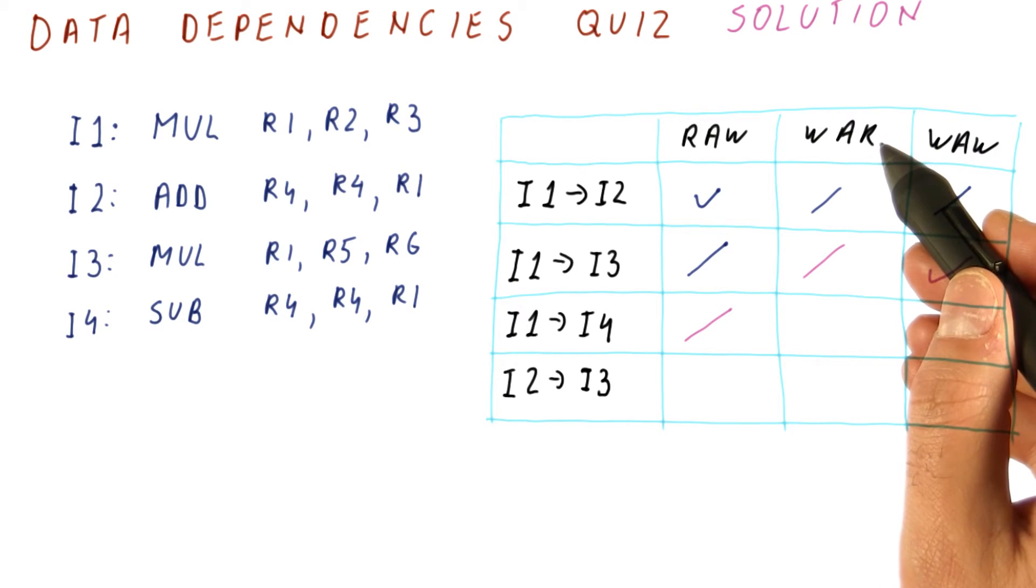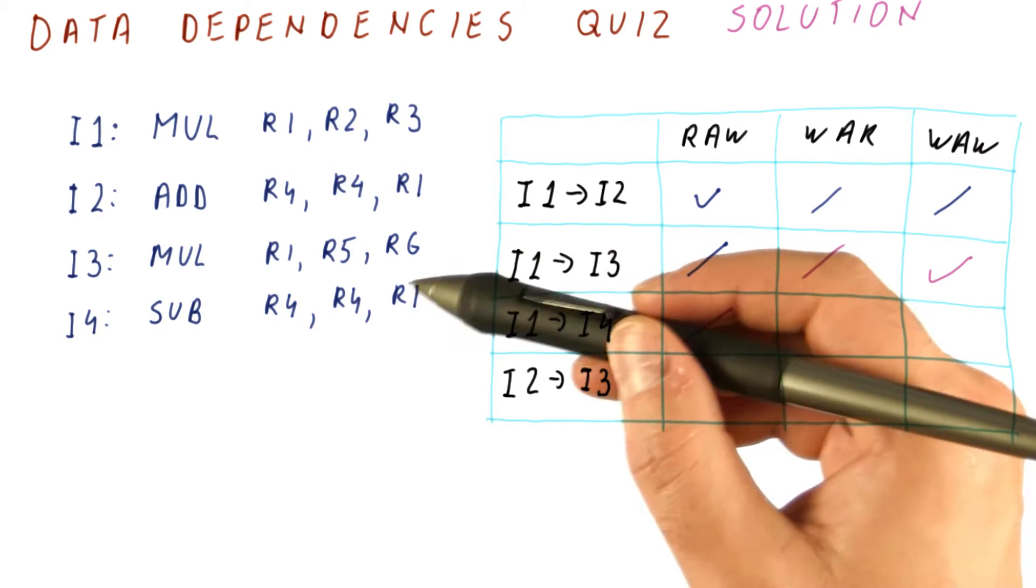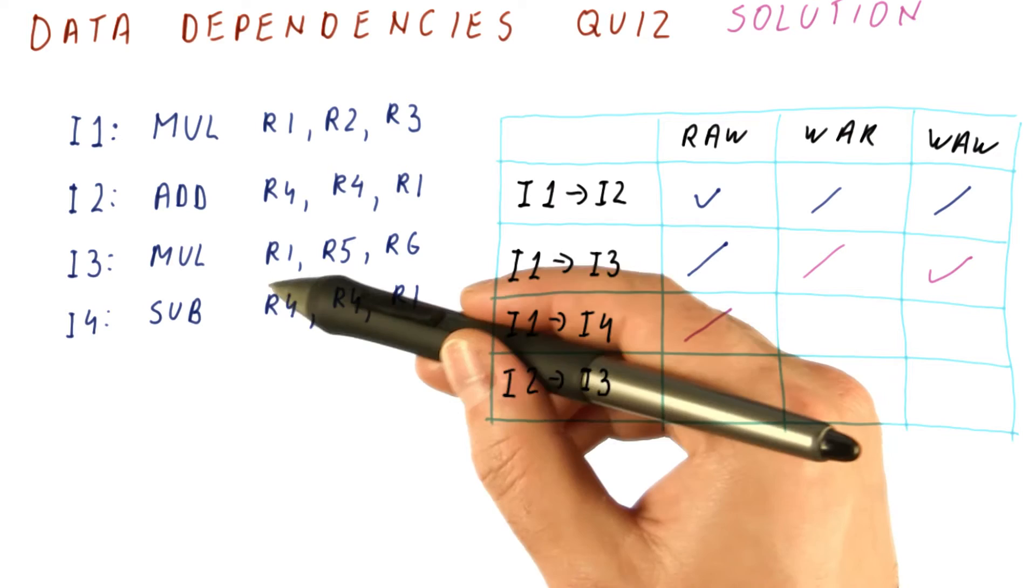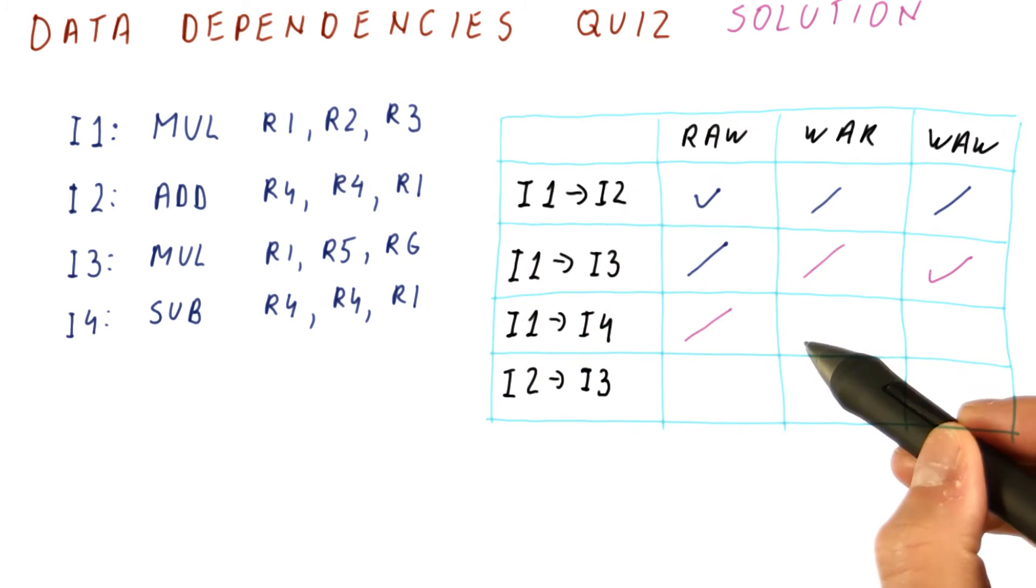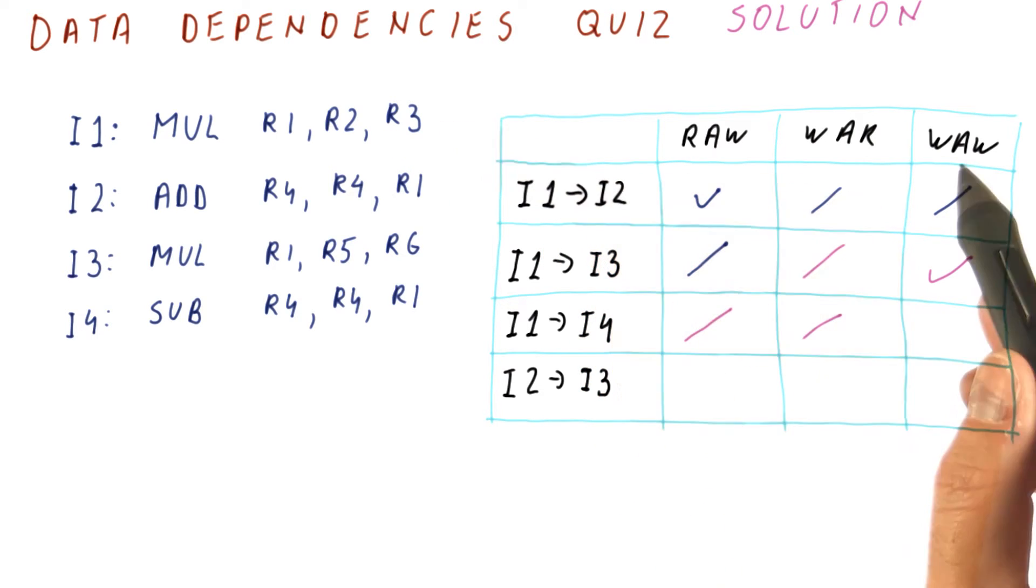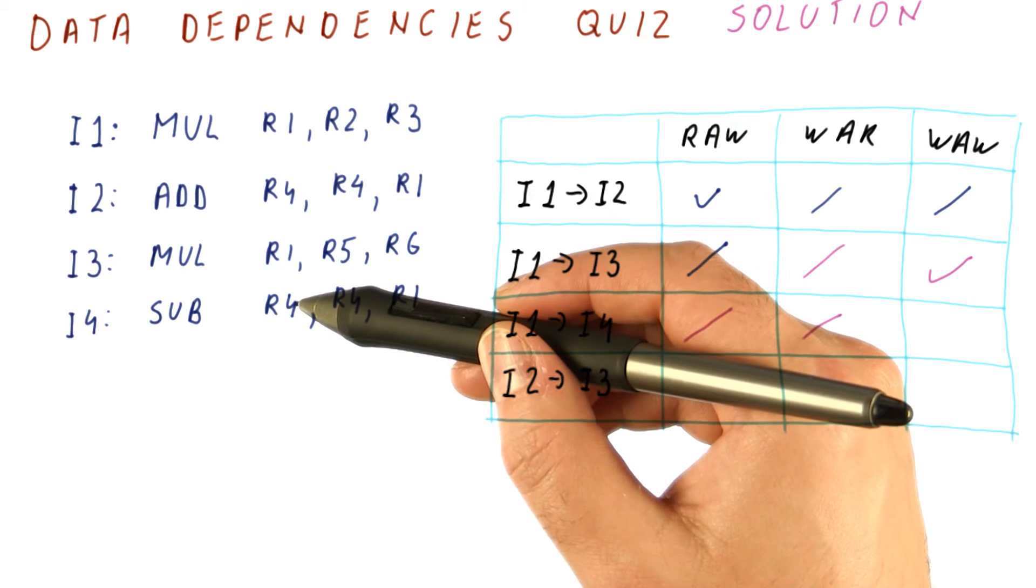Is there a write after read dependence? Is I4 overwriting R4 that was supposed to be read by I1? No, because I1 is not reading R4. Finally, is there a write after write dependence? No, for two reasons.